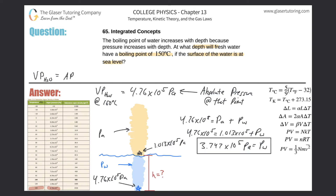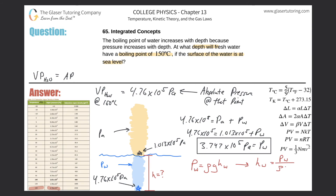Now we need to connect the pressure of the water to a height or depth of water. Recall the pressure formula: pressure equals rho times g times h. So the pressure of water equals the density of water multiplied by gravitational acceleration multiplied by the height, or depth. Solving for h: h_water equals the pressure of water divided by the density of water times gravity.